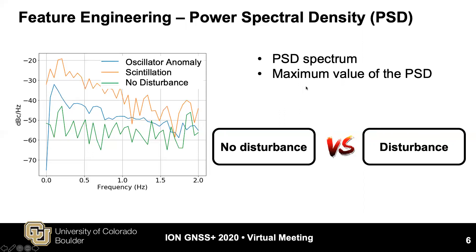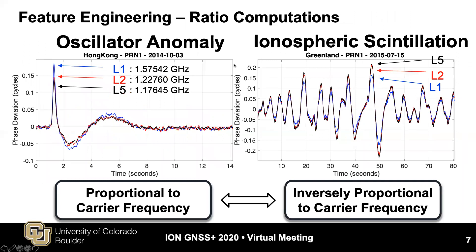The next step is to construct features that distinguish between scintillation and oscillator anomaly, where both are phase disturbances. The plot on the left shows an example of oscillator anomaly phase measurements. The phase measurements on L1 have the largest phase deviation while L5 has the smallest, because the phase deviation caused by oscillator anomaly is proportional to carrier frequency. An example of scintillation is shown on the right, where L5 has the largest deviation and L1 the smallest, because scintillation is inversely proportional to carrier frequency.